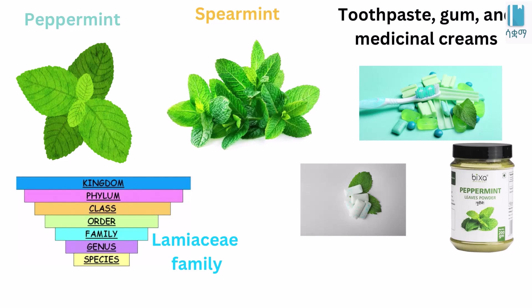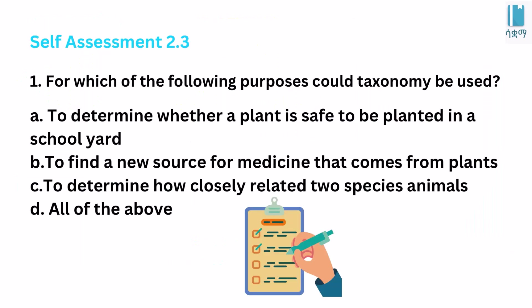This is why we are using taxonomy science. For which of the following purposes could taxonomy be used? To determine whether a plant is safe to be planted in a school yard. To find a new source of medicine that comes from plants. To determine how closely related two species of animals are.